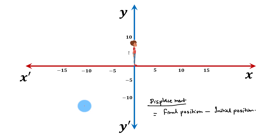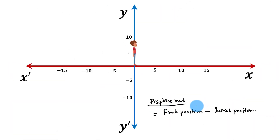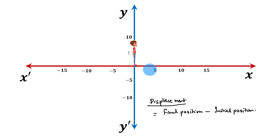Hello students. Can displacement be negative? Yes, it can. But how? Displacement equals final position minus initial position when we are dealing with motion in one dimension. Let us understand it through an example.